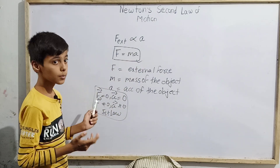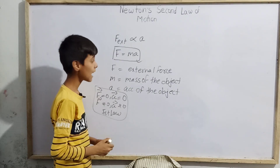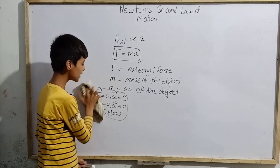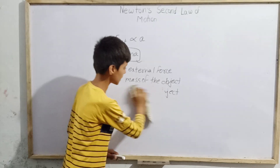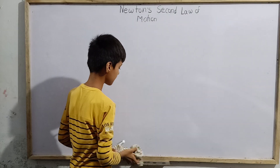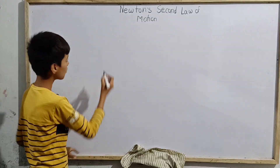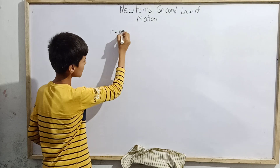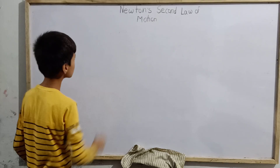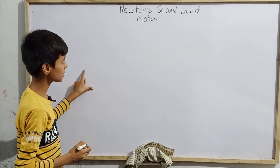Now let us talk about the mathematical formulation of Newton's second law of motion — how we can derive the formula F equals MA. For now, let's set aside that equation and learn how to derive it from other equations.